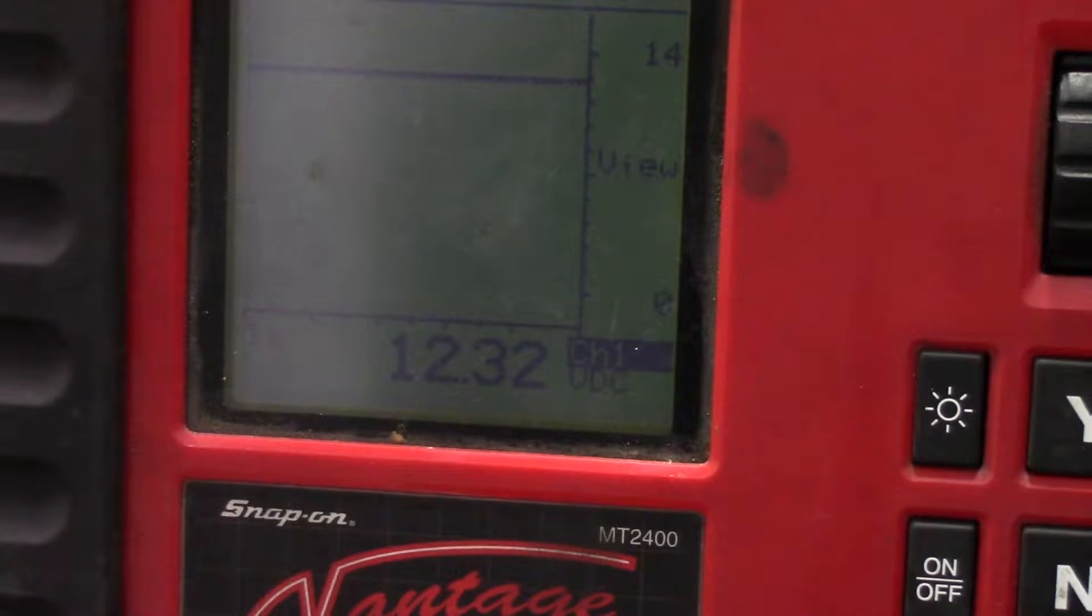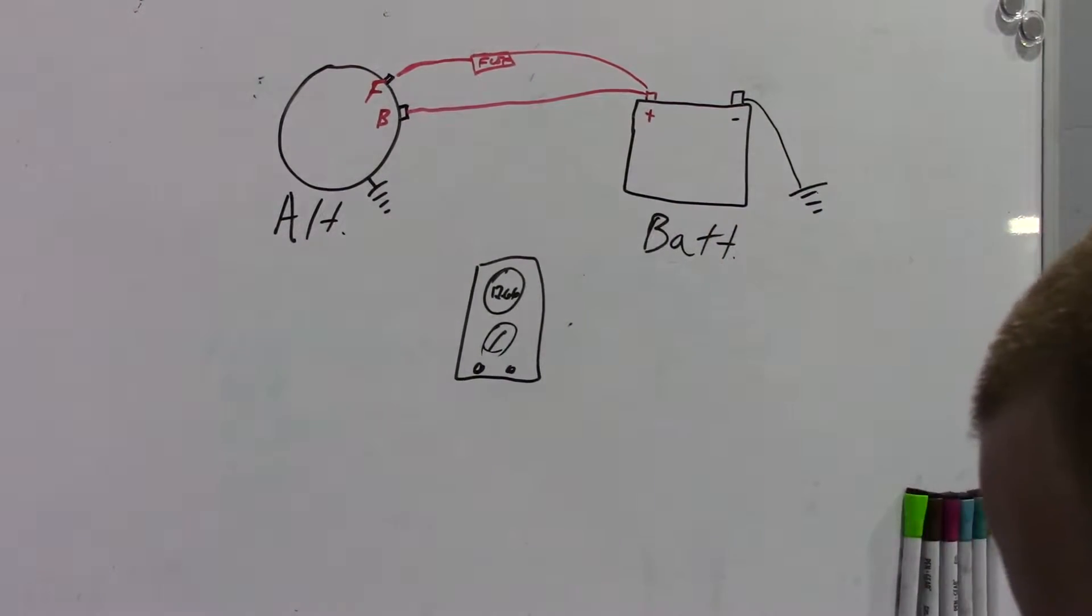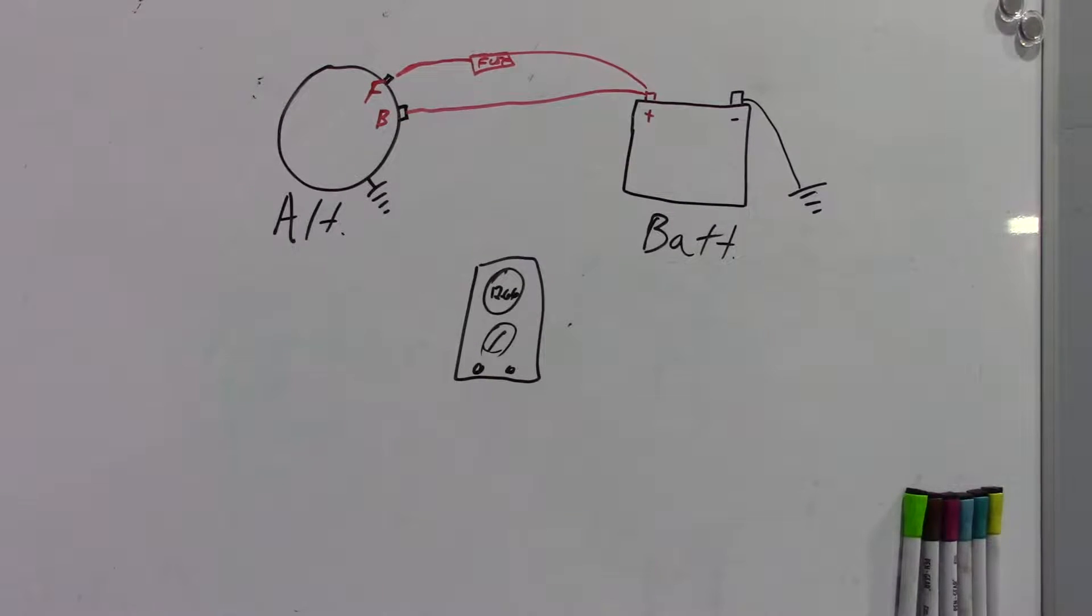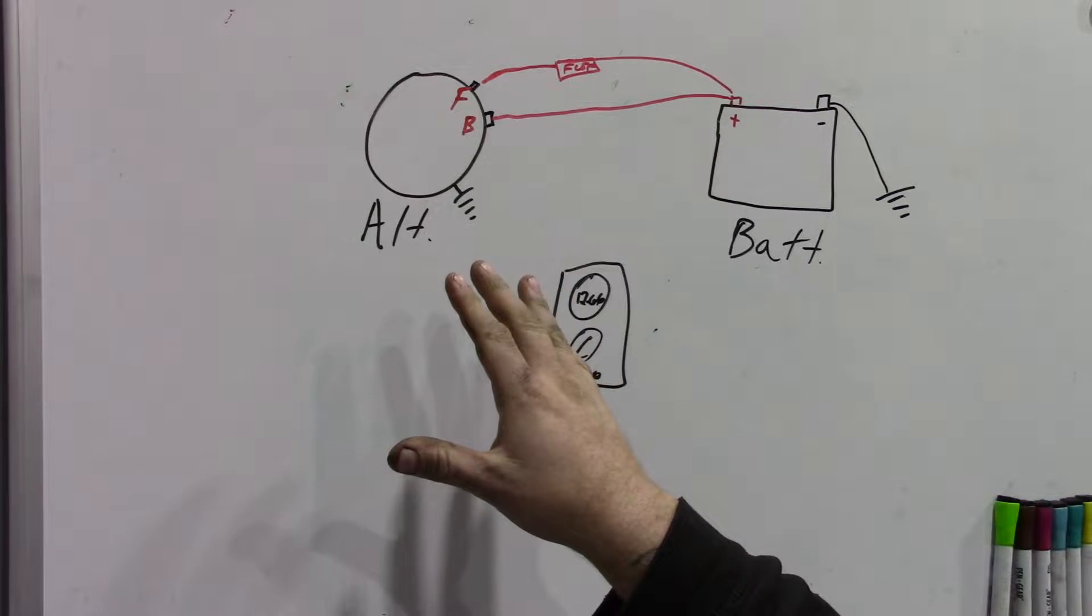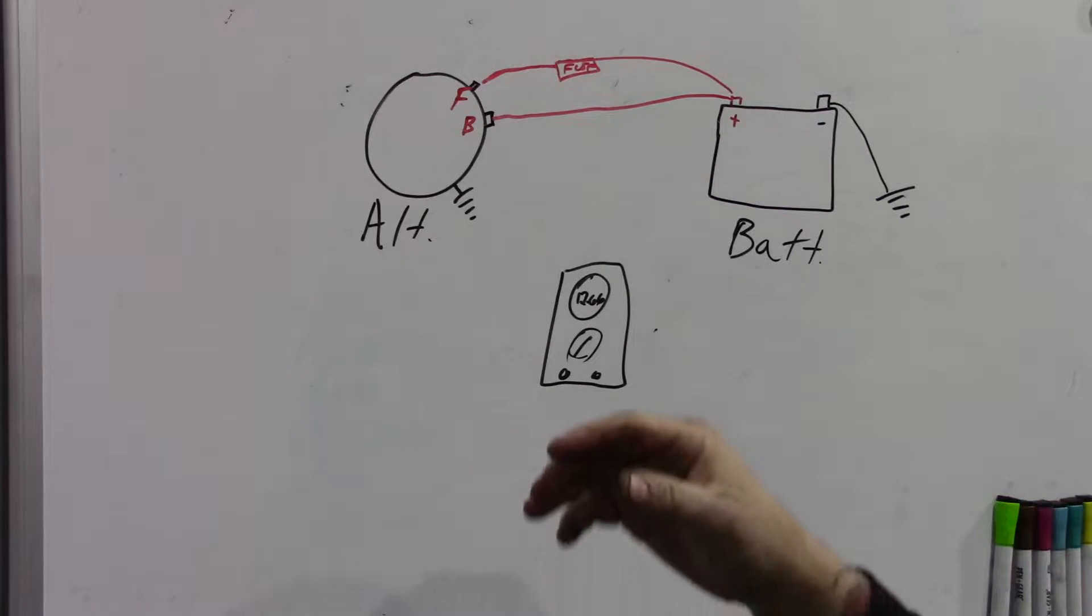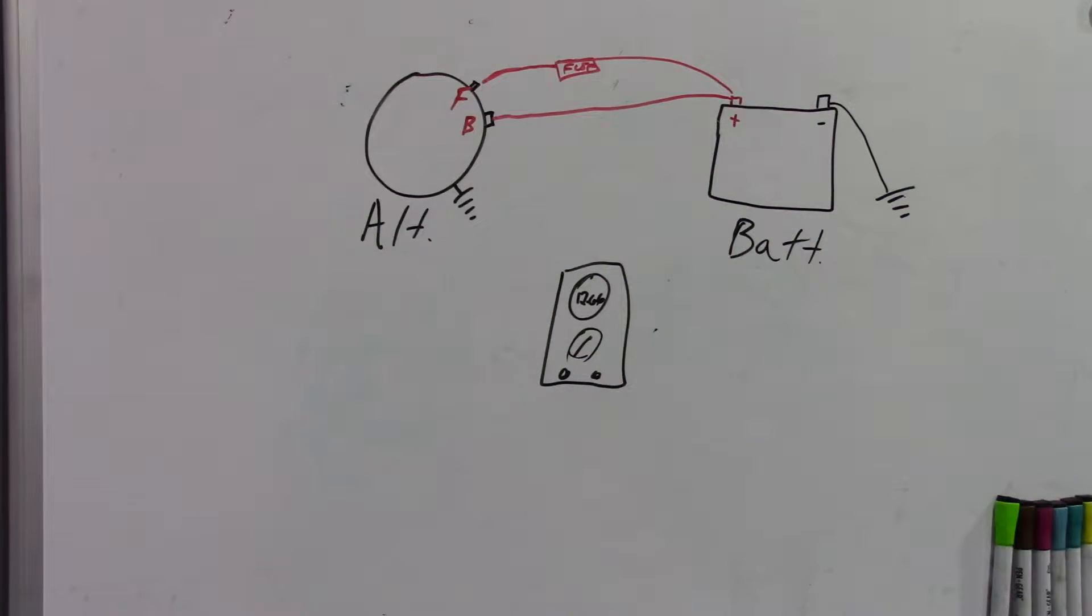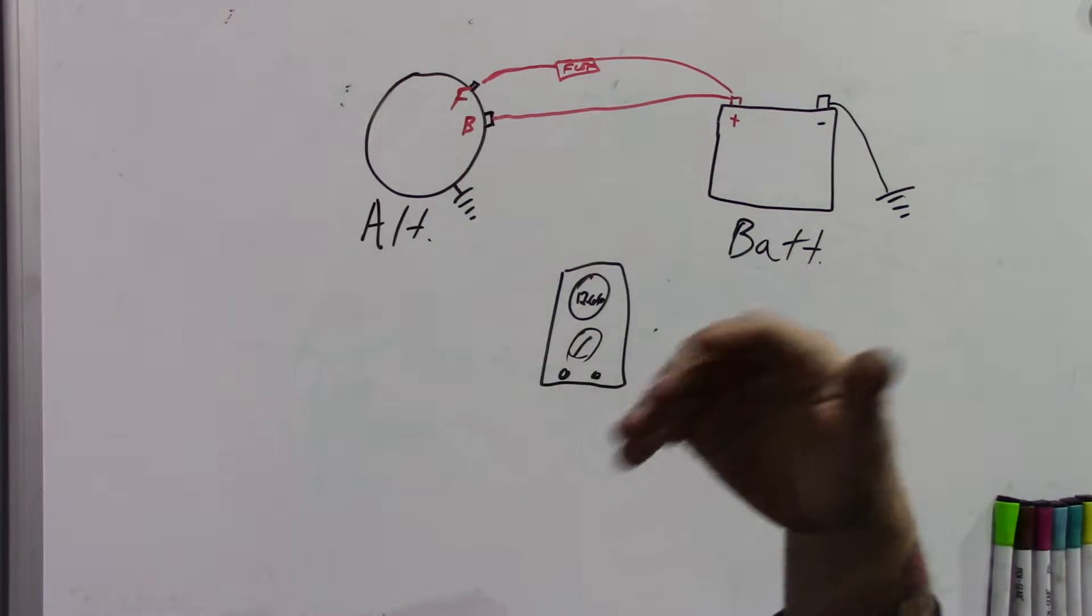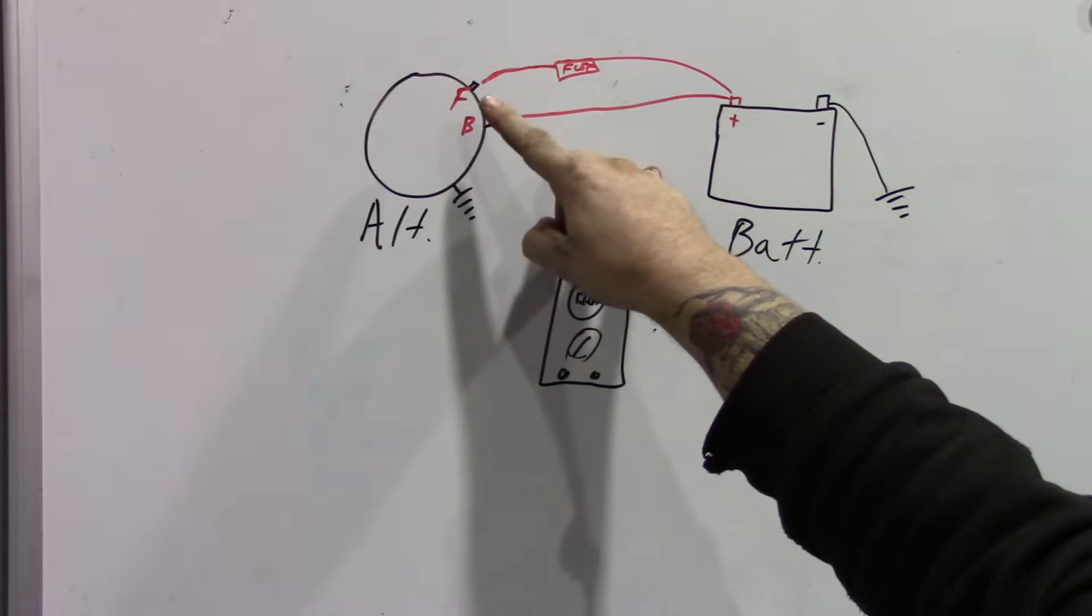I figured I would use my amazing artistic abilities and draw out the diagram of how this charging circuit works. It's really simple. This style of charging system is kind of the old school way of doing it because it does not use computer control to control the alternator. Newer vehicles will send a pulse width modulated signal to tell the alternator to charge 10%, 20%, 50%, 100%, whatever. This style doesn't do that.